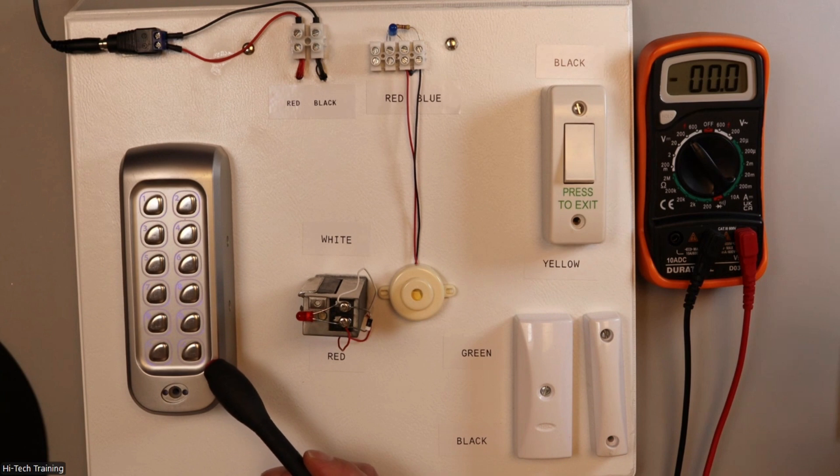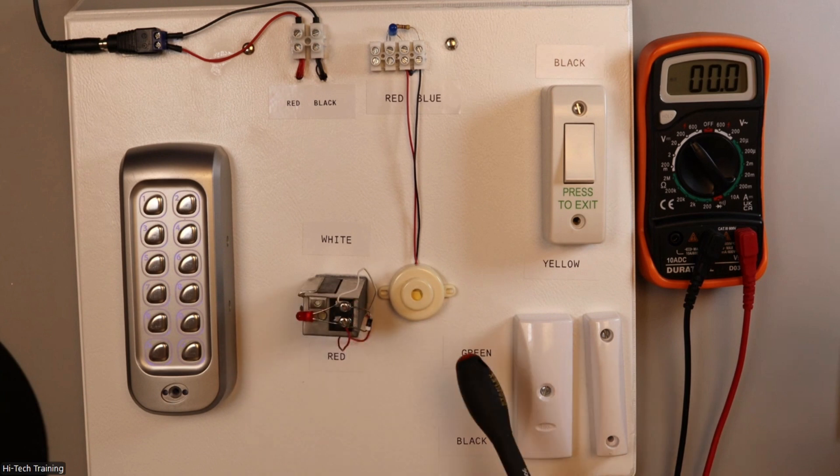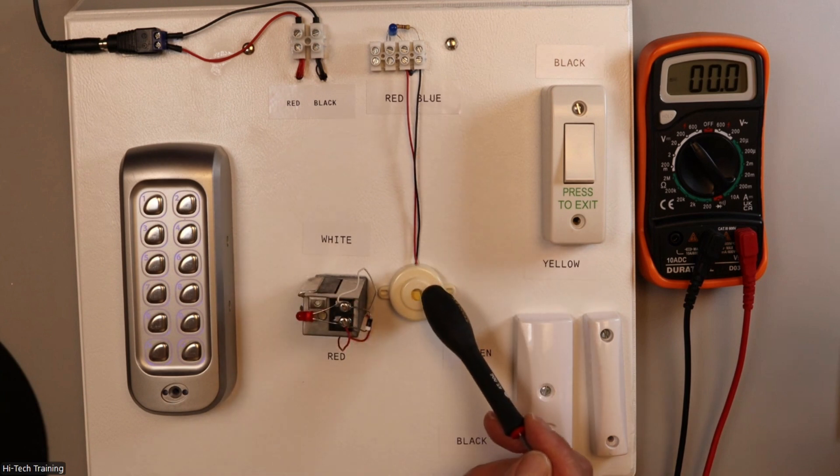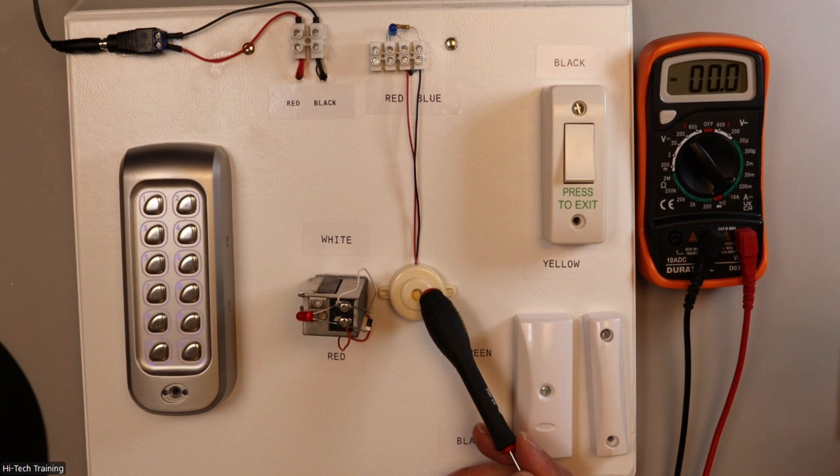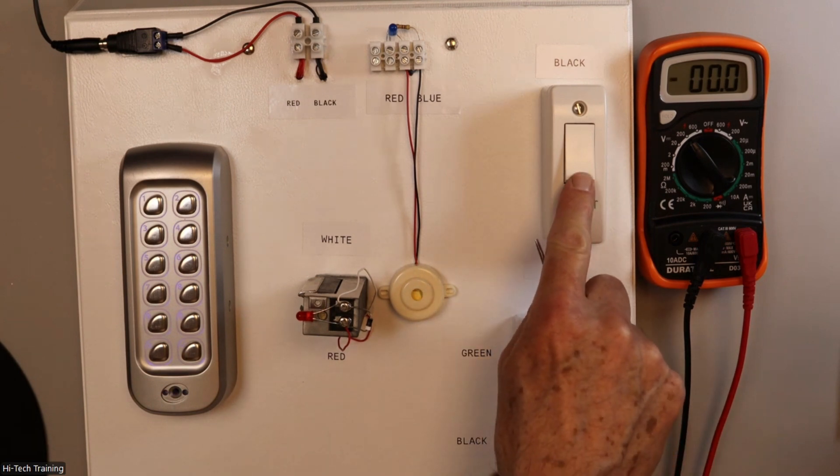We have a keypad unit here, which is the control unit for the whole system. Here, we've got a lock. We have a buzzer here for door left open or door forced open. Here we've got an exit button.